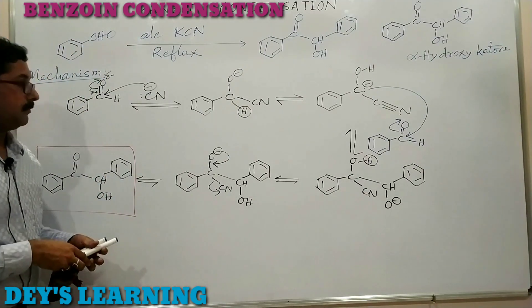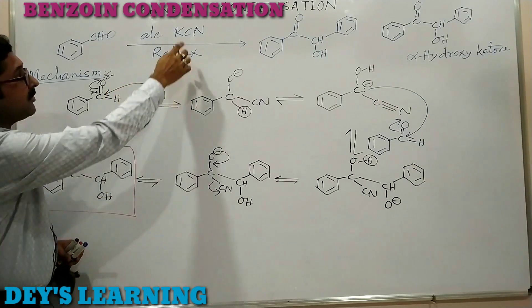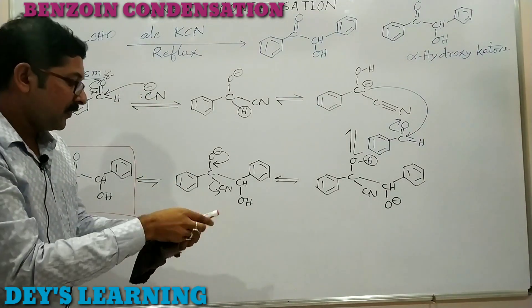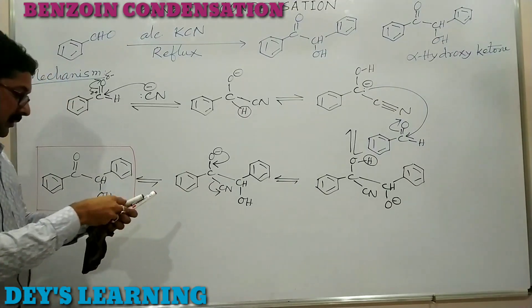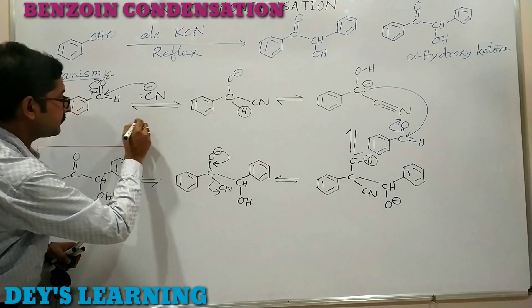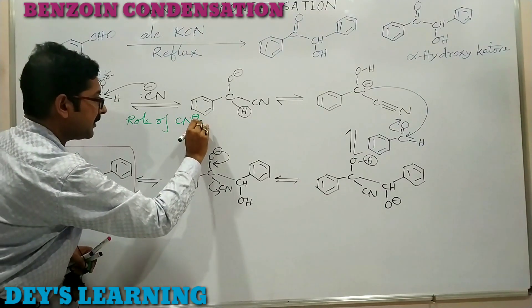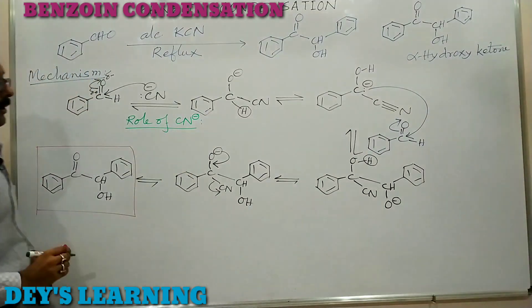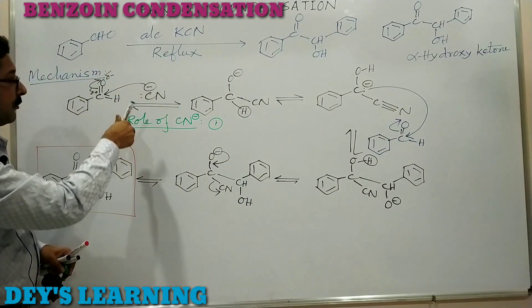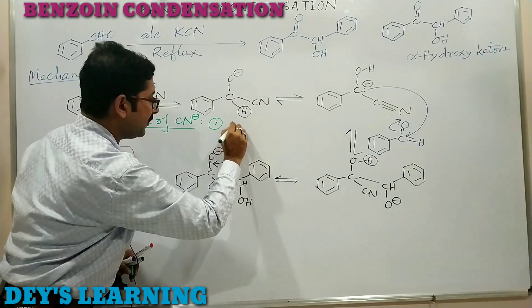Now we discuss the role of cyanide. Potassium cyanide — specifically the cyanide ion — is very specific for this reaction. Number one: in the first step, CN⁻ acts as a nucleophile, a potential nucleophile that attacks at the electrophilic center.